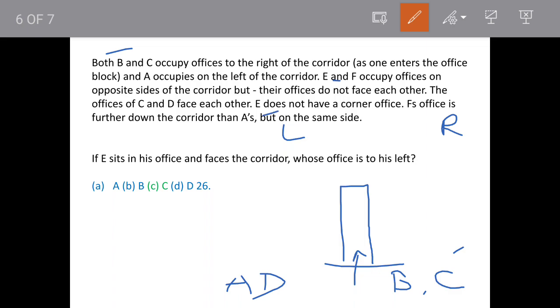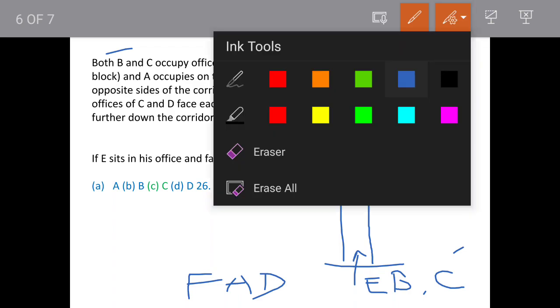Now E's office, E does not have a corner office. And F's office is further down the corridor than A's but on the same side. So that means F is on this side. If F is here, then who is left? E. So E will be on this side. So these are the sides we have deciphered.